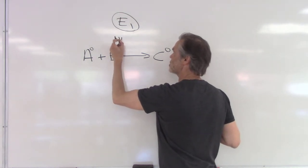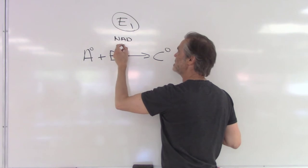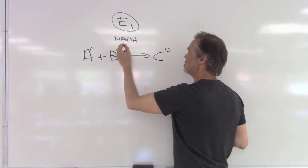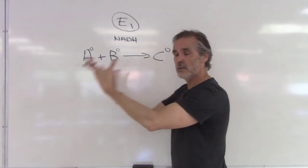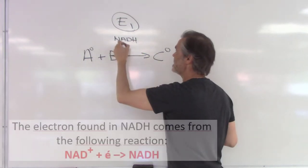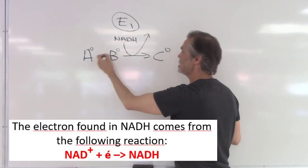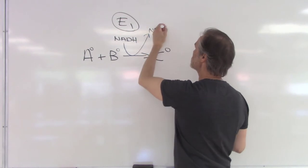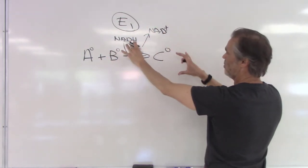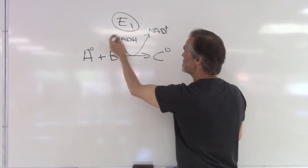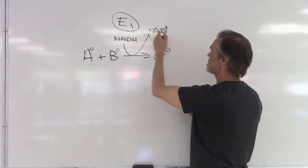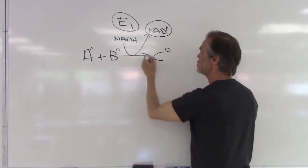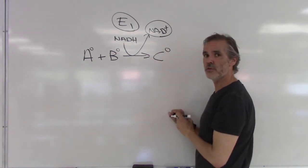NADH is able to - it has an extra electron, and it is able to give this electron here so that C will be created. In order to do this, it will take the electron from NADH here, which will give us NAD+, and the electron will now be used for the creation of molecule C.